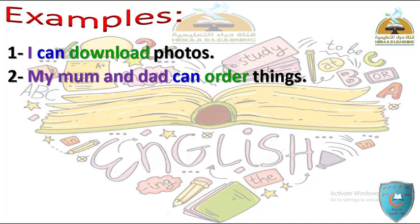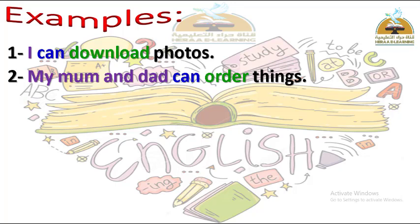المثال التاني: My mom and dad can order things - يعني ماما وبابا يقدروا يطلبوا الأشياء. الاختلاف هنا أن الـ subject جمع plural، لكن برضو بيجي وراها 'can' وبعد كده الـ verb infinitive. نستنتج أن الـ subject سواء مفرد أو جمع عادي بيجي وراها 'can'.